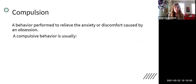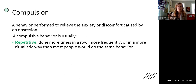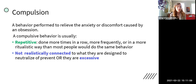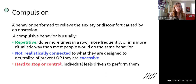A compulsion is defined as a behavior performed to relieve the anxiety or discomfort caused by an obsession. Compulsive behaviors are typically very repetitive — often done more times in a row, more often, or in a more ritualized way than necessary. By definition, compulsions are not realistically connected to what they're designed to neutralize or prevent, or they may just be excessive to accomplish that goal. Compulsions are difficult to stop or control; people feel driven to perform them and can't calm down until they've done them the right way, enough times, or until it just feels right.